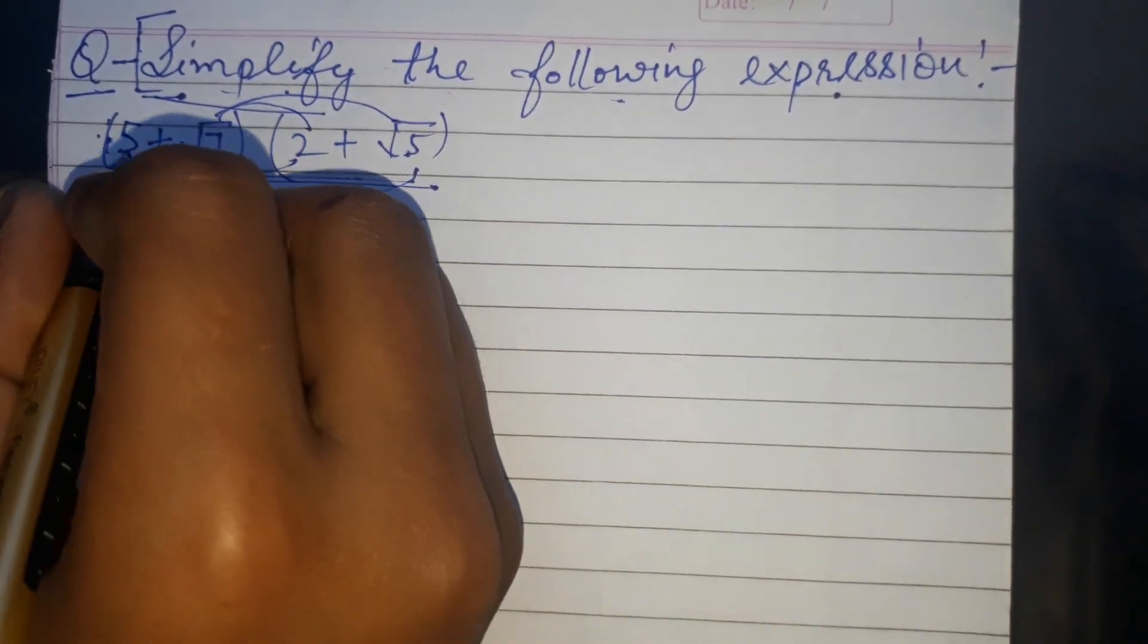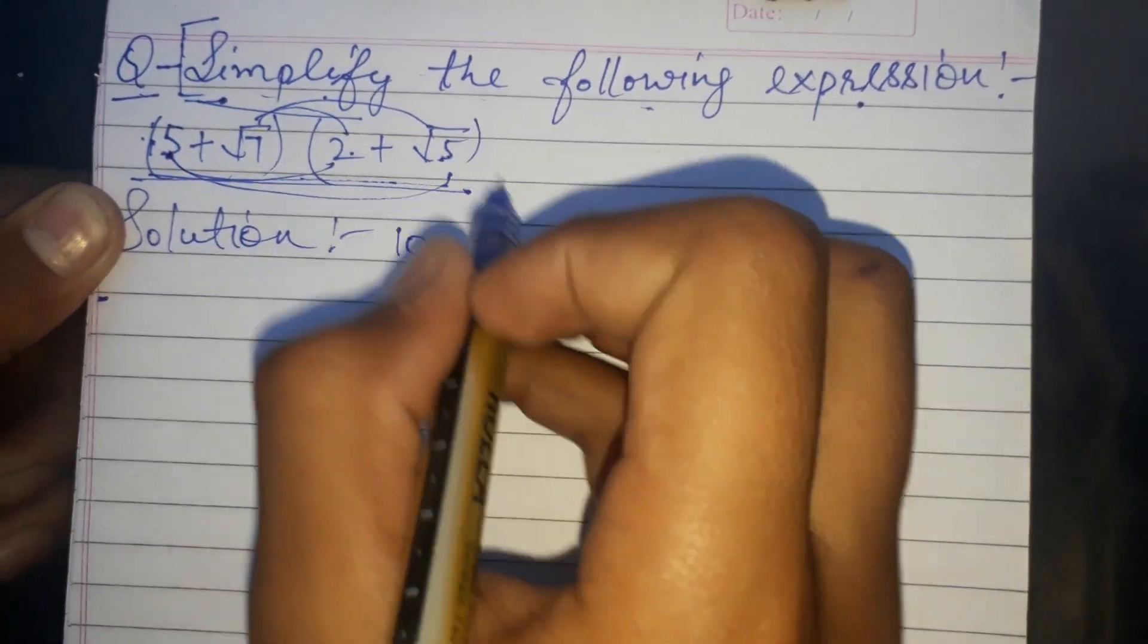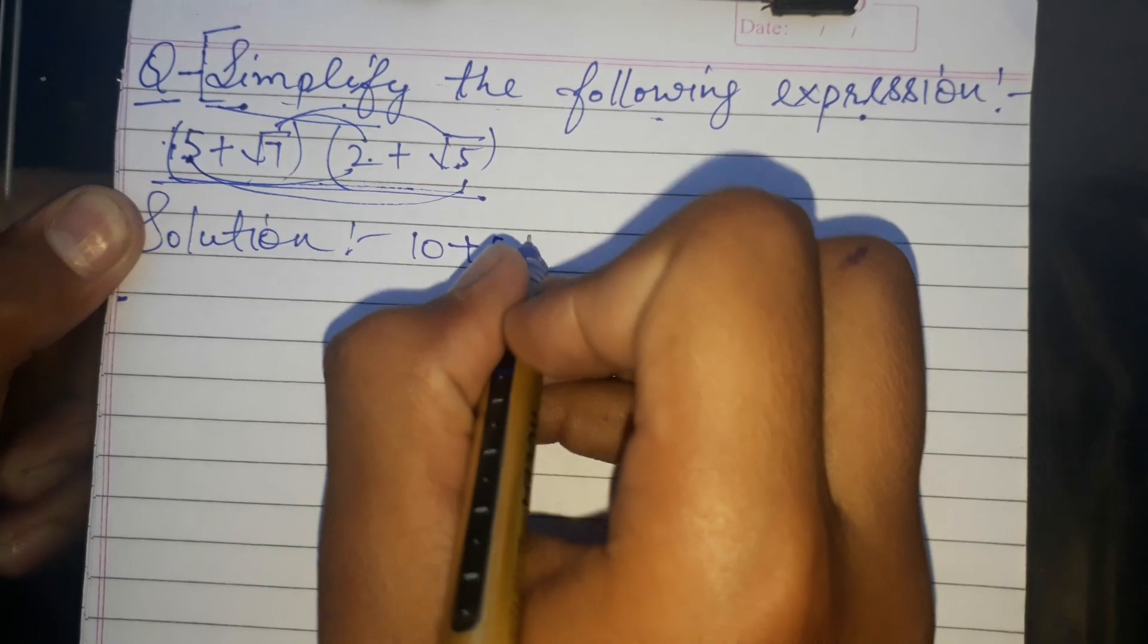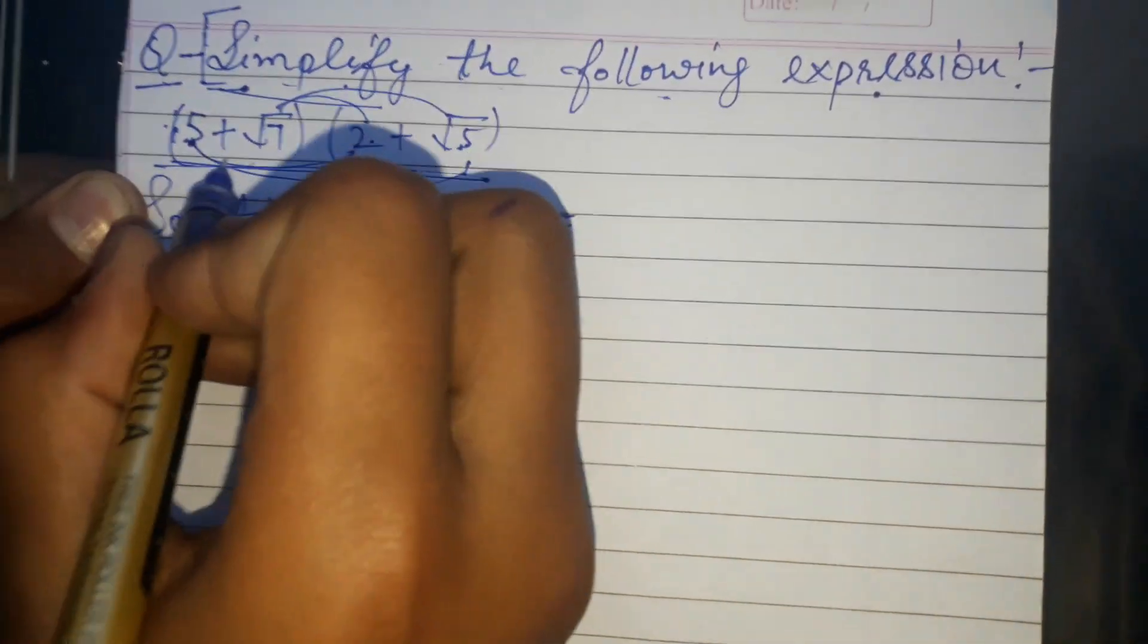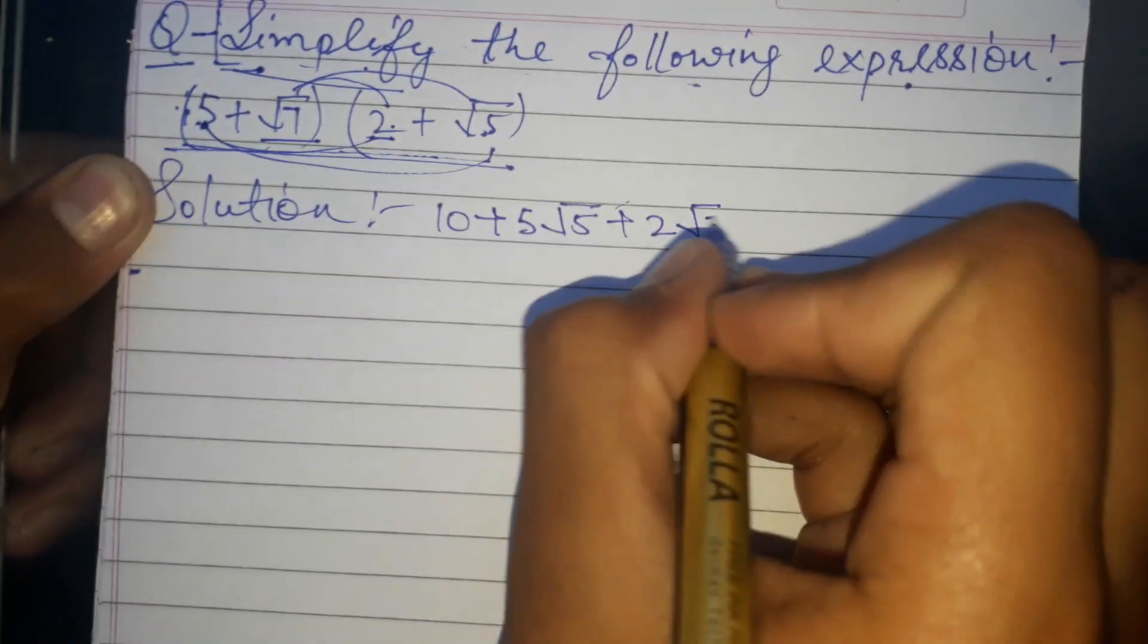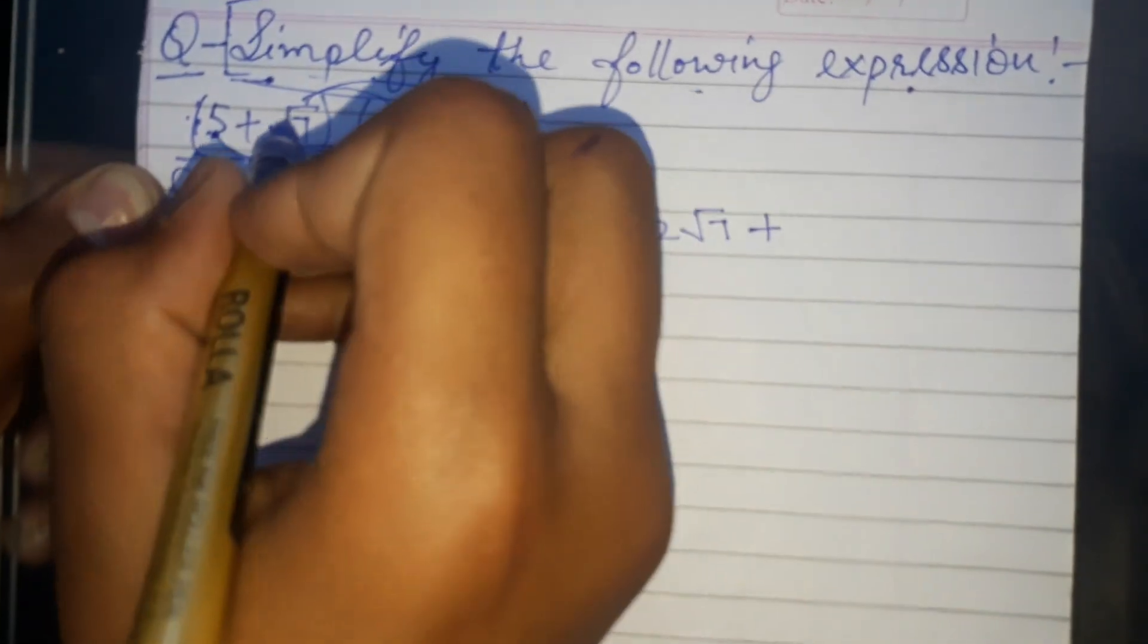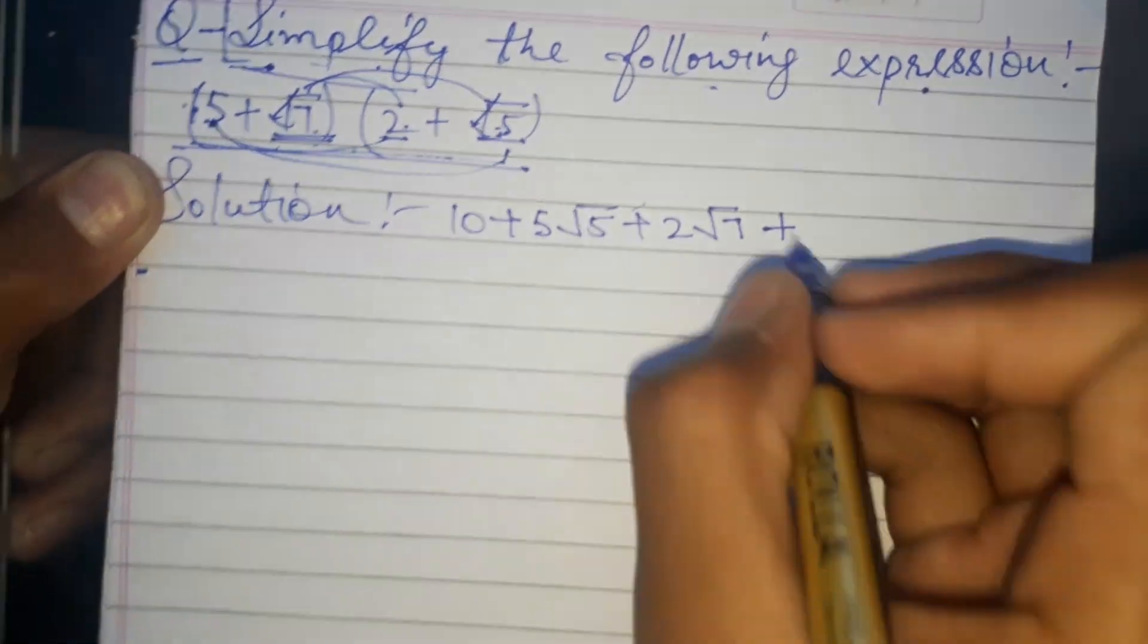So let's solve this. 5 to the 10, and plus 5 into root 5, positive 5 root 5. Then root 7 to 2 multiply, plus 2 root 7. And then plus root 7 to root 5, root cancel, root 5 is 35.